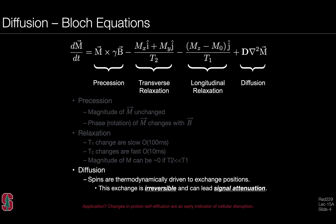Recall from an earlier lecture that we provided a comprehensive description of the Bloch equations — a complicated set of coupled differential equations that include precessional terms, transverse relaxation terms, longitudinal relaxation terms. At the time we ignored the potential effects of the diffusion term. While there are complicated ways of developing the mathematical implications of that specific diffusion term, this lecture will instead give insight into the effects of diffusion on the spin system.